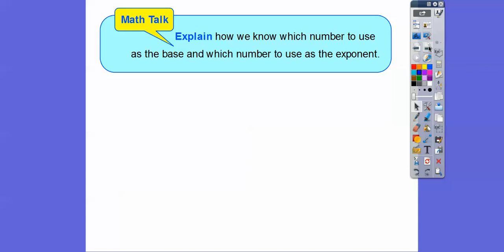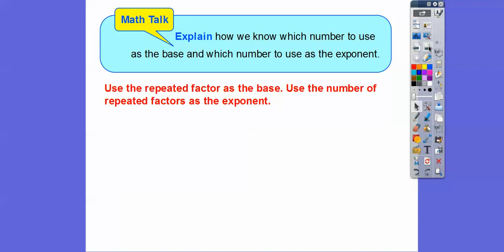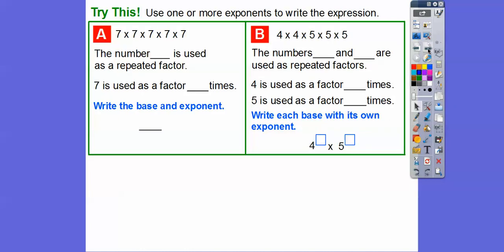So explain how we know which number to use as the base and which to use as the exponent. We use the number that's being repeated as the base, and the number of times it's being repeated is going to be our exponent.